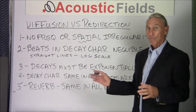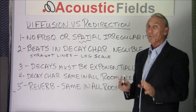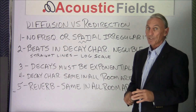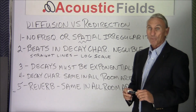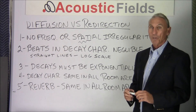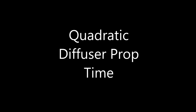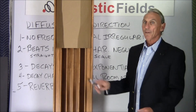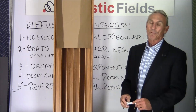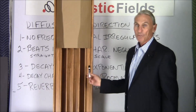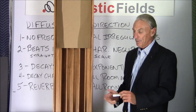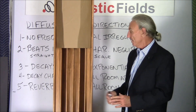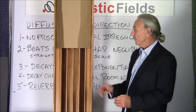How do you get these five characteristics? You use devices that are true sound diffusion devices, not sound redirection devices. Let's look at the differences. Here we have an example of sound diffusion versus sound redirection. This is our diffuser — QRD series 7, based on prime number 7 — we'll use that as our prop here.